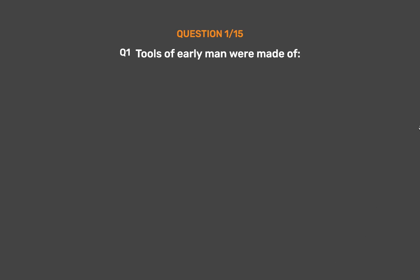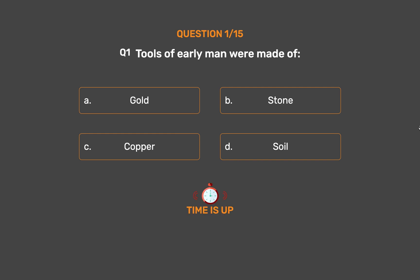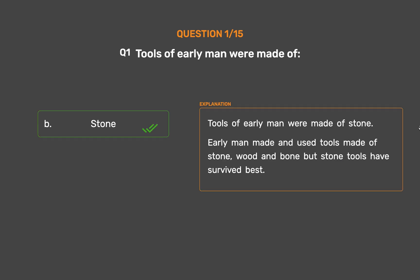Question number one. Tools of early man were made of: Option A - Gold, Option B - Stone, Option C - Copper, Option D - Soil. The correct answer is Option B: Stone. Tools of early man were made of stone. Early man made and used tools made of stone, wood and bone, but stone tools have survived best.